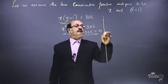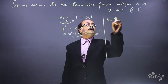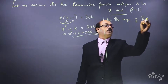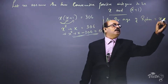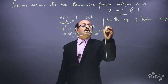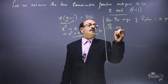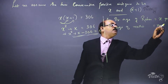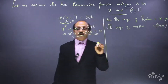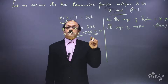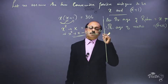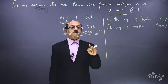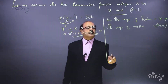Let the present age of Rohan be x years. Therefore the present age of mother will be x plus 26, since it is given that the mother is 26 years older than Rohan. So present age of Rohan is x and present age of mother is x plus 26.